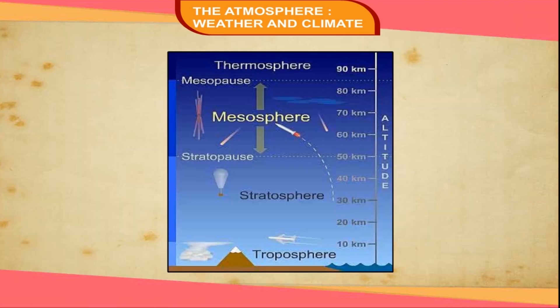Mesosphere. It lies above the stratosphere and extends to about 80 km above the earth's surface. Here, the temperature decreases with height until it reaches minus 100 degrees centigrade. This layer has the lowest temperature in the atmosphere. Meteors entering the atmosphere usually burn up in the mesosphere. The upper limit of this layer is called the mesopause.